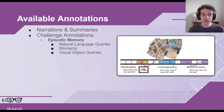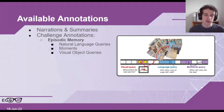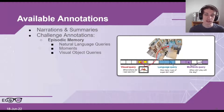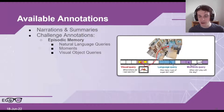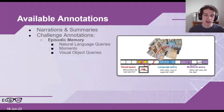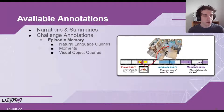We also have a set of annotations for each of our challenges, and these are broken down into the five different benchmark tasks, with each task having a separate set of annotations. For example, the benchmark of episodic memory is broken down into three different challenges: natural language queries, moment queries, and visual object queries, with an example of each shown on the right. For each of these different challenges, we have a subset of the data, maybe between 50 to 200 hours, which have these annotations.